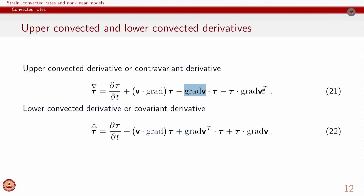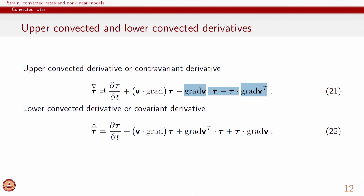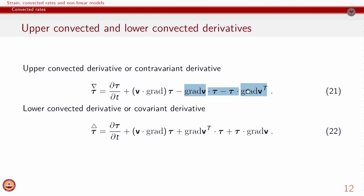Some terms are related to the deformation in the material. If the material is not deforming, the gradient of velocity would be zero, and therefore we will not have any contributions from those terms when evaluating the rate of change of stress. To summarize: the overall convected rate is based on the rate of change of stress with time, rate of change of stress with position, and then the contribution to the convected rate based on the deformation that the material is accounting for.